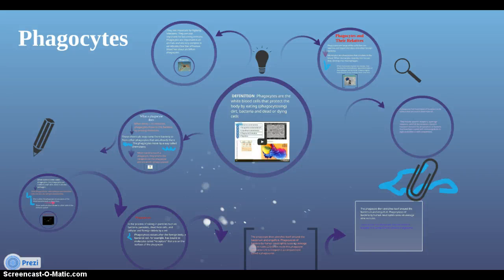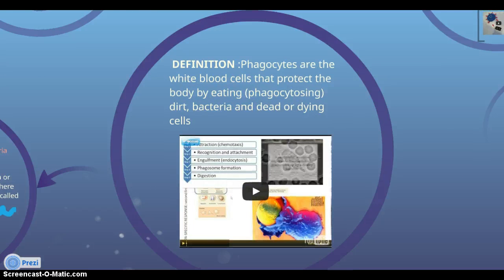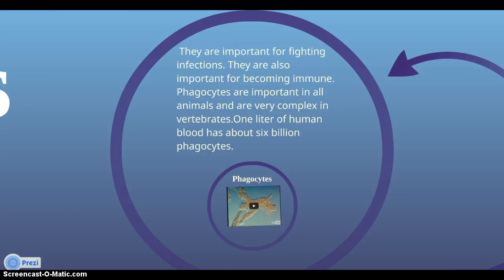Phagocytes are the white blood cells that protect the body by eating, through phagocytosis, dirt, bacteria, and dead or dying cells. They are important for fighting infections and for becoming immune. Phagocytes are important in all animals and are very complex in vertebrates. One liter of human blood has about 6 billion phagocytes.